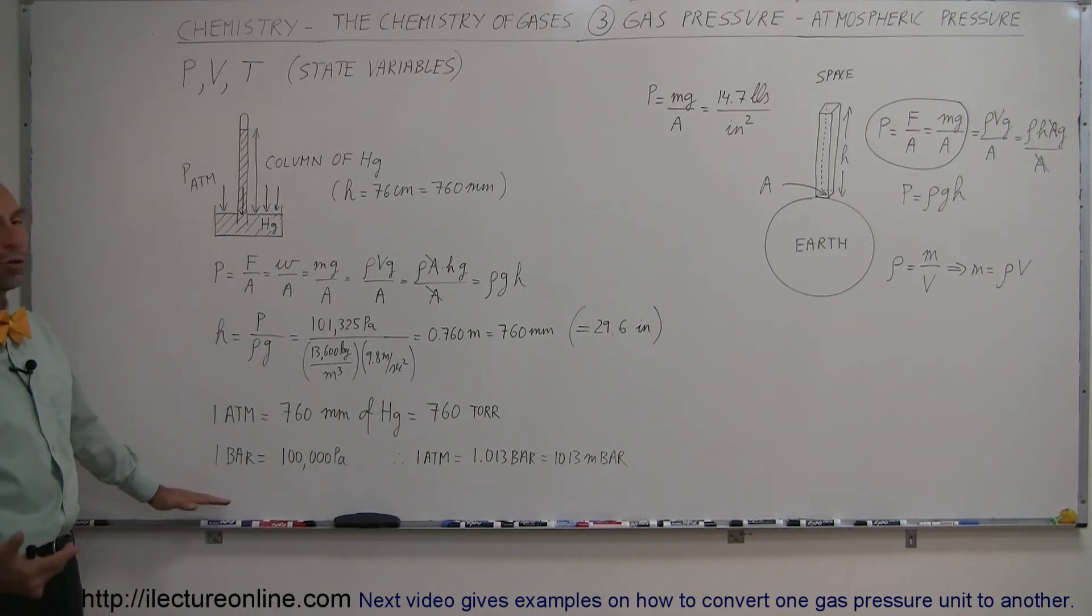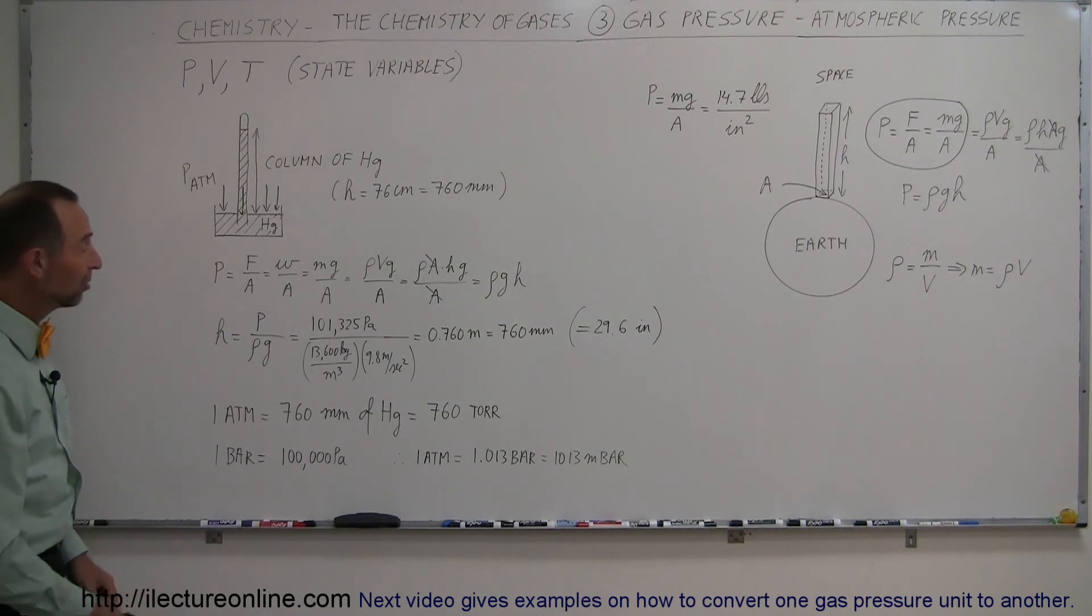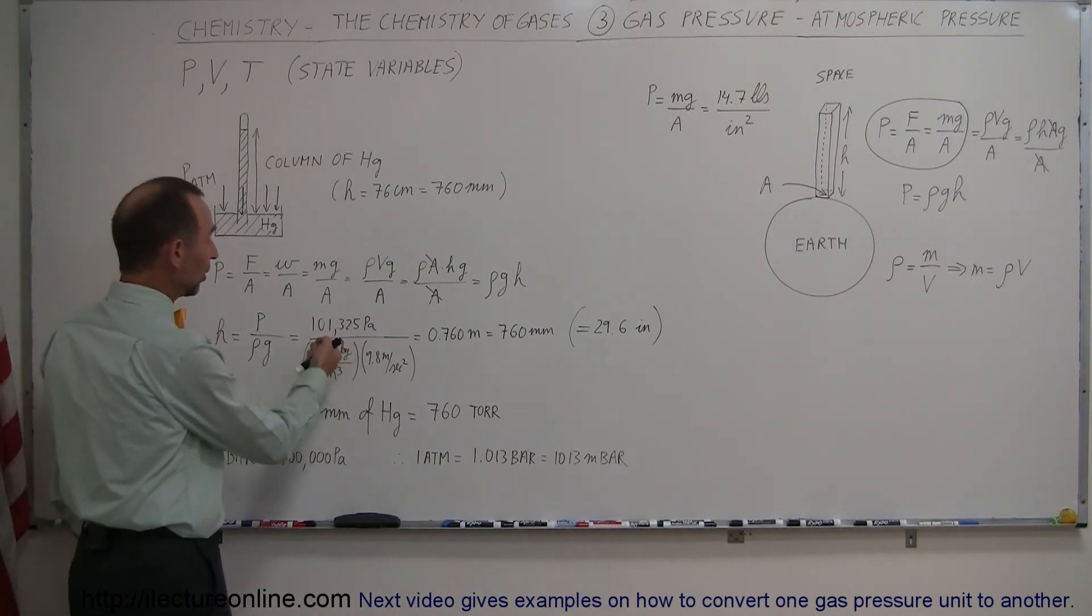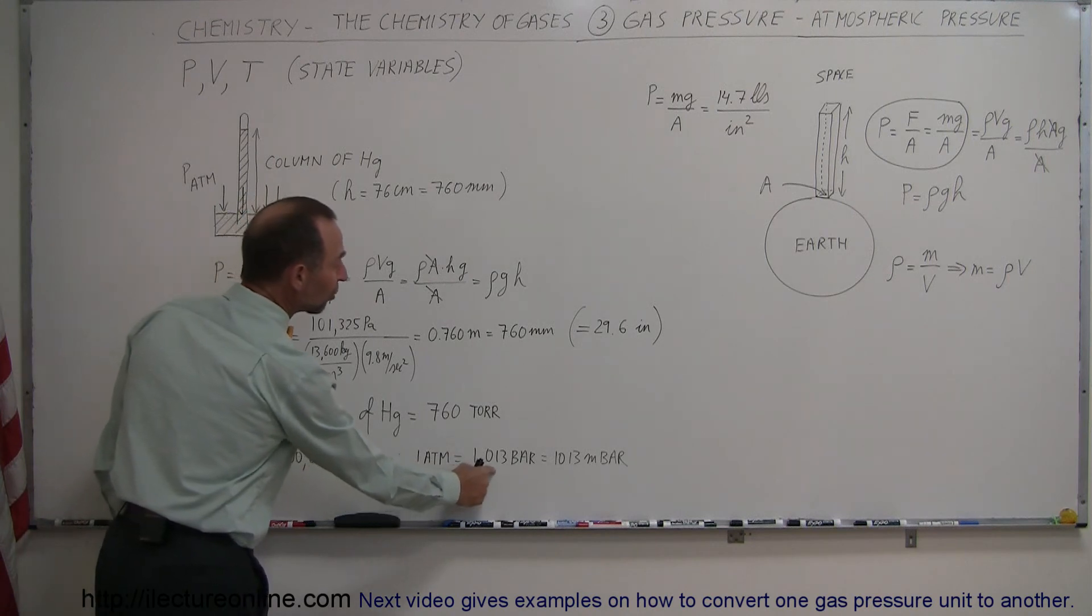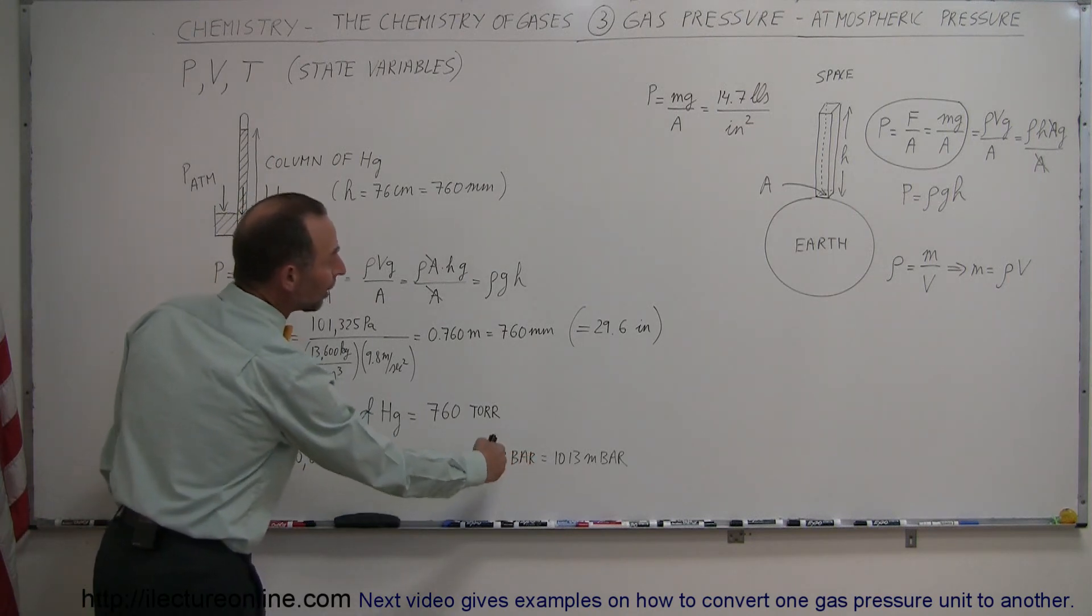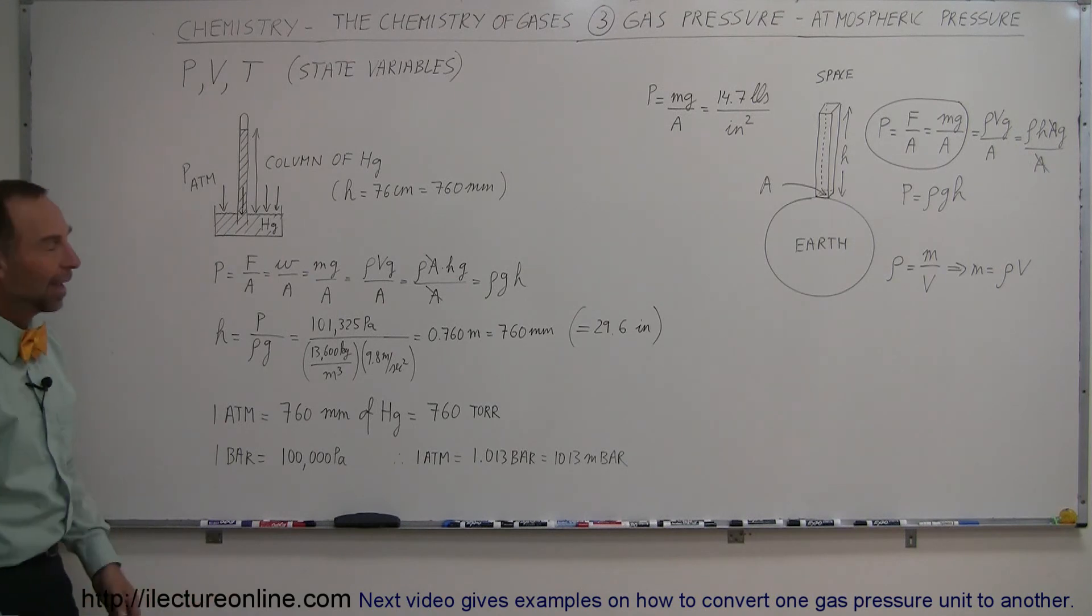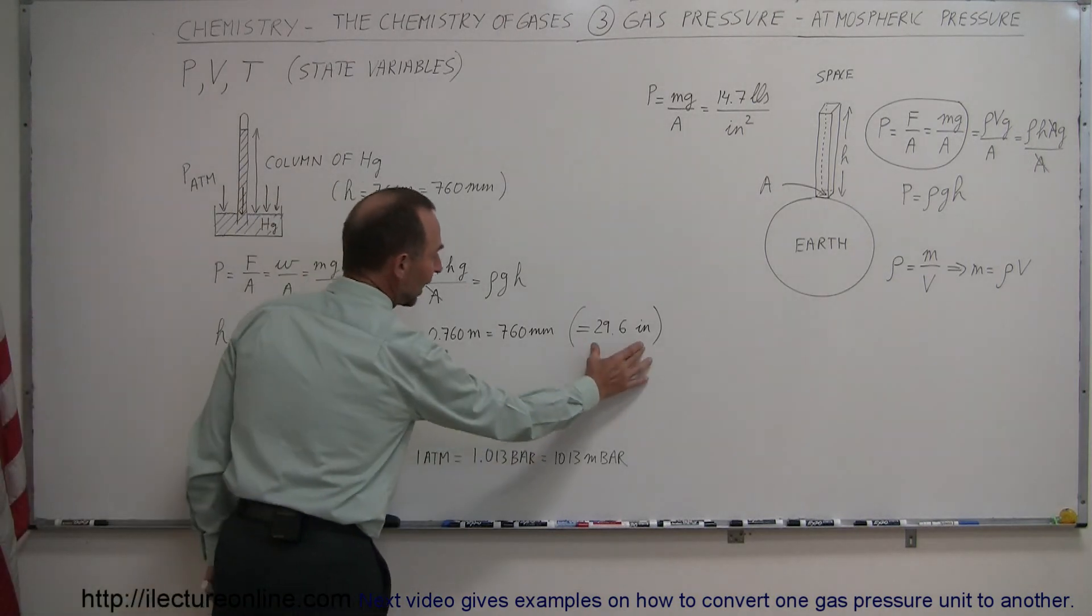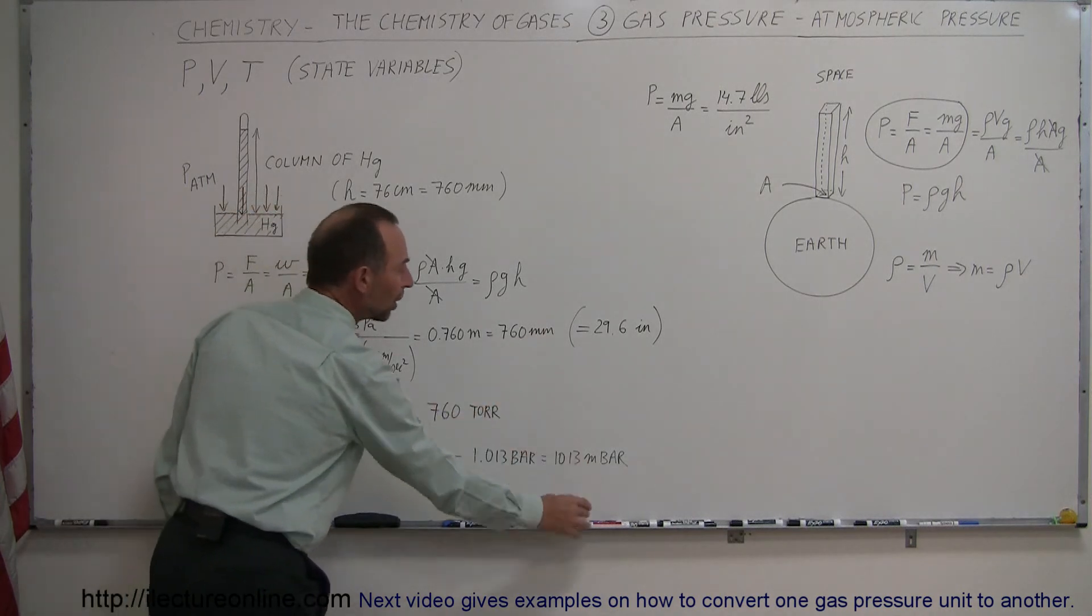Also we have another unit for pressure, we use this a lot in weather reporting, one bar is equal to 100,000 pascals, and since the atmospheric pressure is 101,325, so one atmosphere would be 1.013 bars, or 1013 millibars. So we talk about atmospheric pressure in terms of inches of mercury, millimeters of mercury, bars, or millibars.